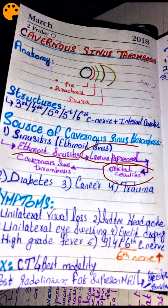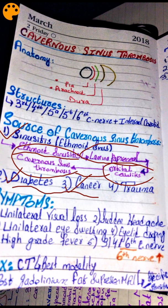When orbital cellulitis spreads upward and involves the brain, it is called cavernous sinus thrombosis. The second cause is diabetes and cancer, because both are immunosuppressive states in which a patient has vulnerability to form clots. When clots form, they can cause thrombosis, and cavernous sinus thrombosis is one example. Trauma may also cause cavernous sinus thrombosis, as trauma can also induce clot formation.